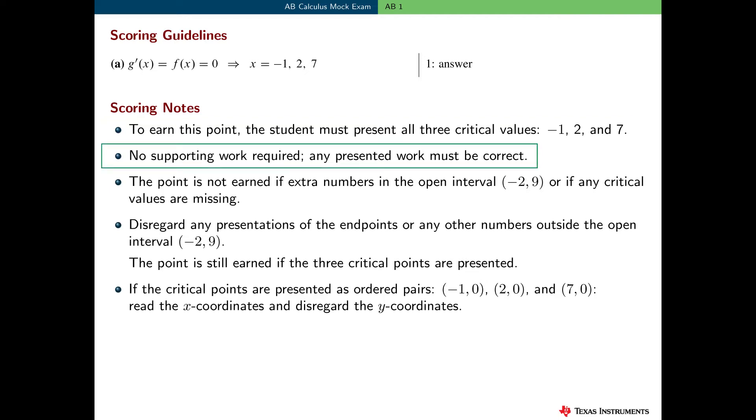In this problem, no supporting work is necessary. Now, we usually ask students to show all of their work. But here, the student can simply read the critical numbers from the graph. So, just presenting the three values is sufficient to earn the point. If the student presents extra numbers in the interval minus 2 to 9 in addition to the three correct values, then they do not earn the point. And if any of the three correct values is missing, they do not earn the point. They need all three, and exactly three.